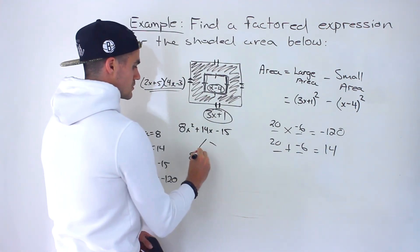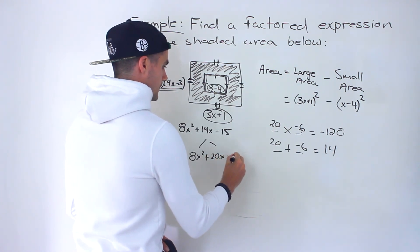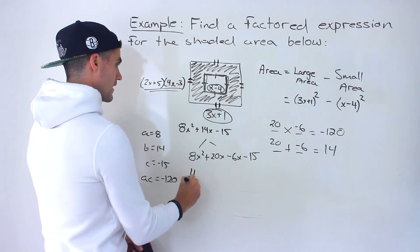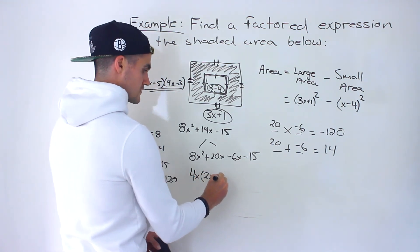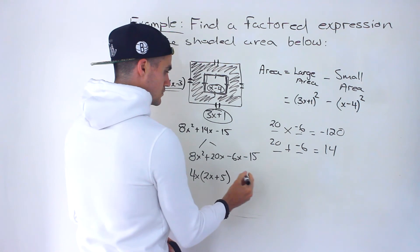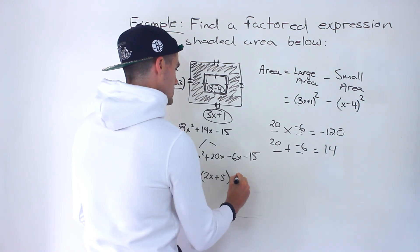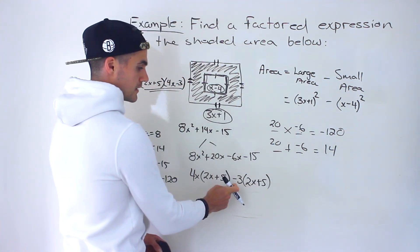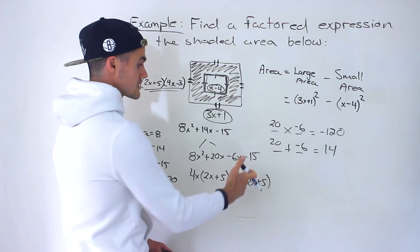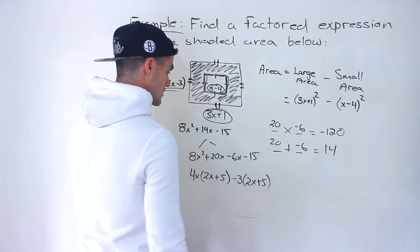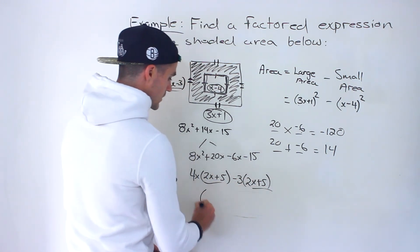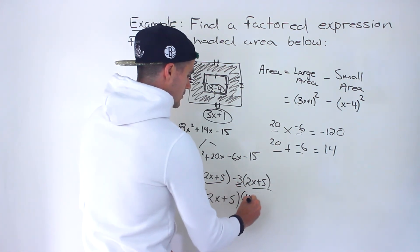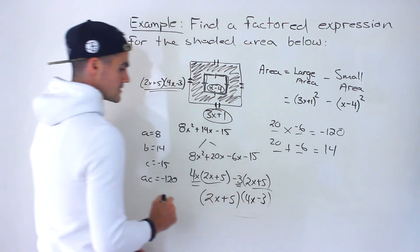From these two, we could take out a 4x, and we'd be left with 2x plus 5. And from these two, we could take out a minus 3, and we'd be left with 2x plus 5 as well. Then we could take out the bracket 2x plus 5, and we'd be left with 4x minus 3. So the exact same solution.